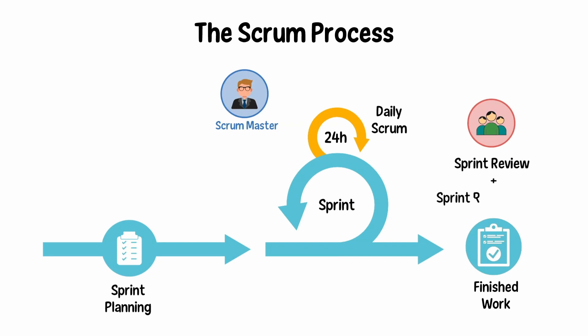Sprint Retrospective focuses on the process. During a sprint retrospective, the Scrum team examines what went well in the sprint and what needs to be improved. They devise concrete strategies for improving their own processes, tools, and relationships.